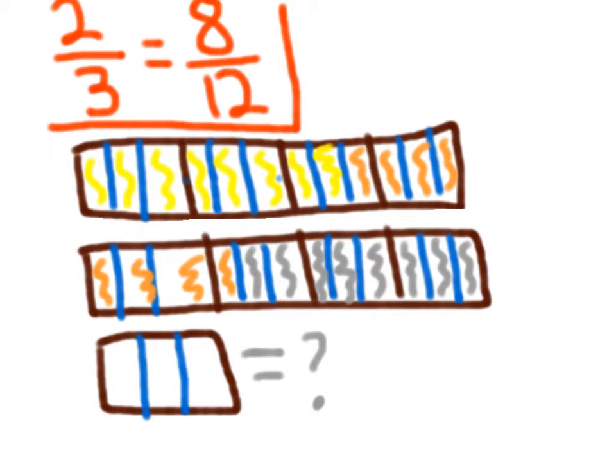So 1, 2, 3, 4, 5, 6, 7, 8, 9, 10, 11, 12. Now I'm going to do that with both my bars.